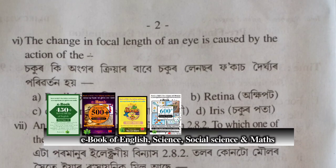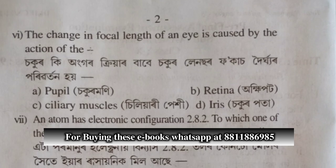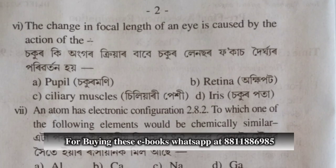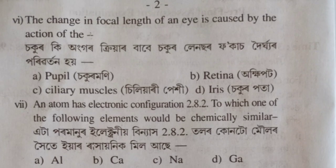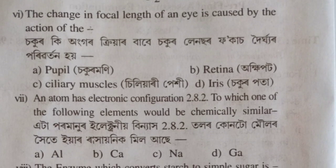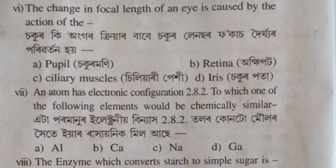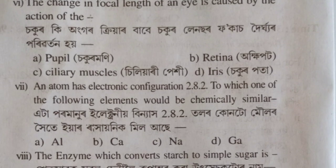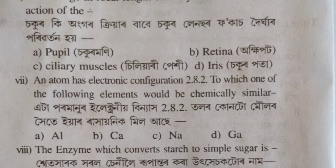Question number 6: the change of focal length of an eye is caused by the action of the — the ciliary muscles control the focus. The correct option for question 6 is option number C.